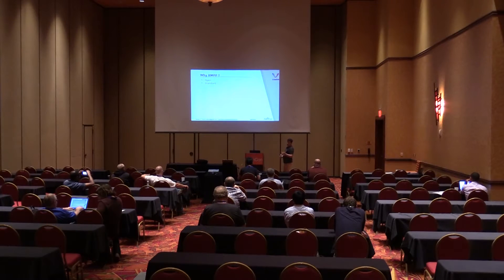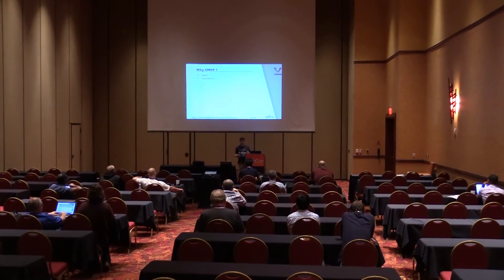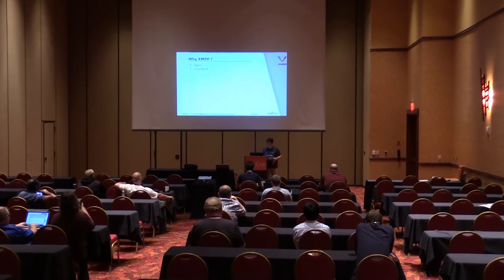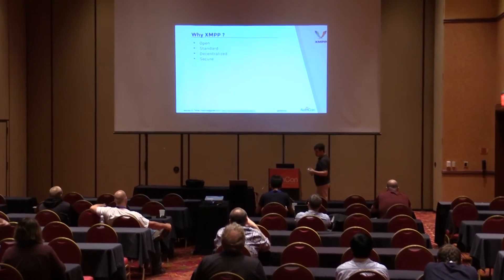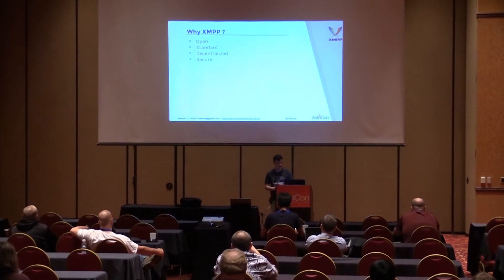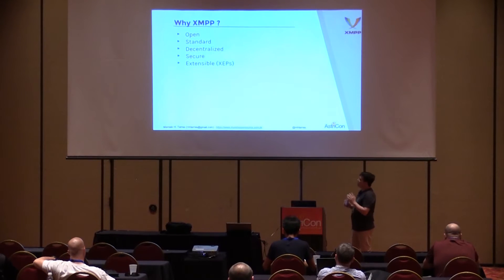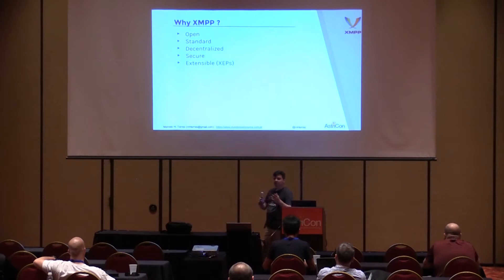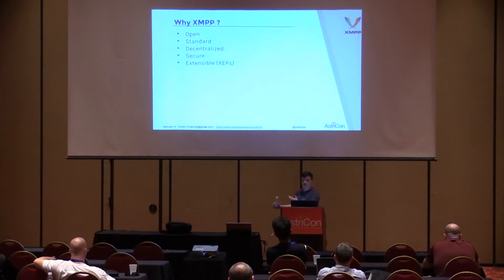XMPP is a standard protocol with more than 15 years of existence. Asterisk already supports it, which makes it easier to use. XMPP is decentralized and secure — you can use TLS for connections. Asterisk is extensible and has XMPP extension protocols, also known as XEPs, which can add new features. The XMPP Standards Foundation is always working on new XEPs to modernize the protocol for the new mobile world.